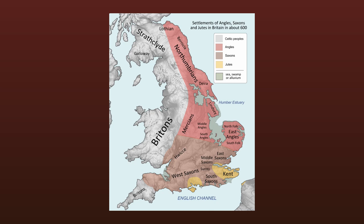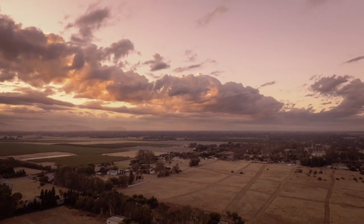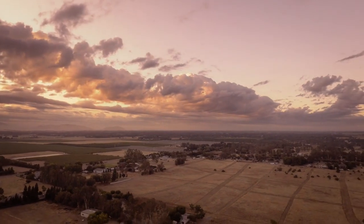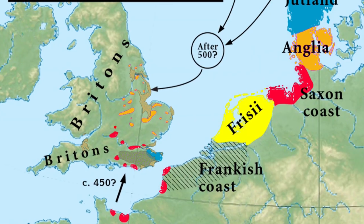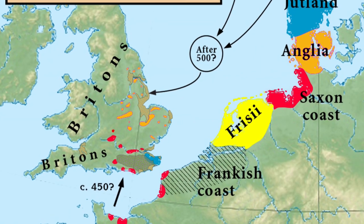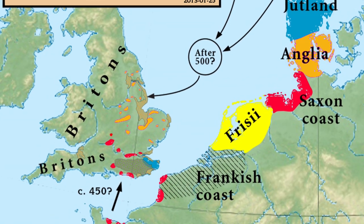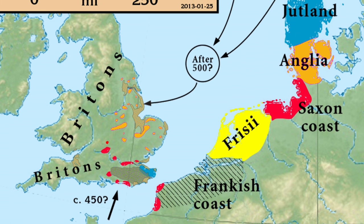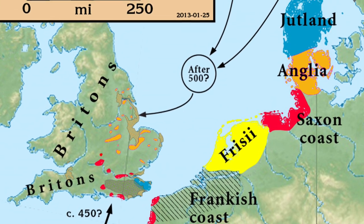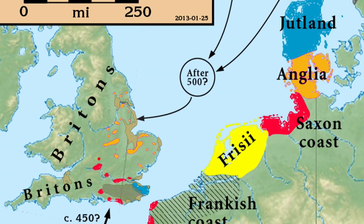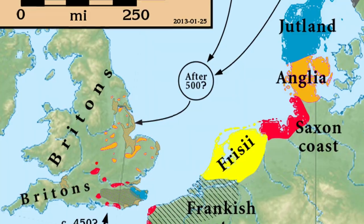Bede writes that after initially coming over in three warships, word quickly spread of the fertile lands in Britain, and more Angles and Saxons sailed over. They came from three powerful Germanic tribes — the Angles, the Saxons, and the Jutes — according to Bede, and they were led by two brothers, Hengist and Horsa.